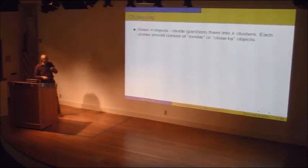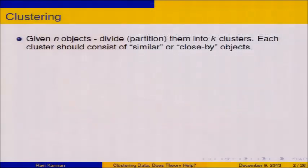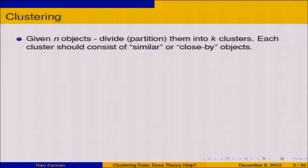Let me define what clustering is. Clustering, as probably all of you know, is just the problem of doing the following. You're given N objects, and you want to divide them. In this talk, you'll partition them, so strictly each object will go into one cluster. There are softer versions of these, but for concreteness, we'll focus on this. Partition them into K clusters. K is the number of clusters throughout the talk. Each cluster intuitively should consist of similar or close-by objects.